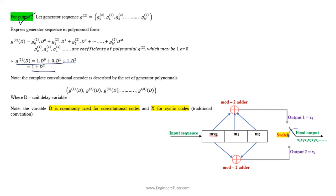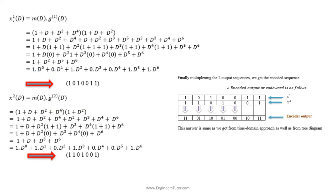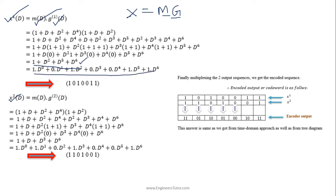Note that d is normally used for convolutional codes and x for cyclic codes — this is the traditional convention. We represent the first and second outputs in terms of polynomial representation. From block codes we know x = m·g, where m is the message signal and g is the generator matrix. Similarly we multiply the message polynomial with the generator polynomial, and for the first output we get 1 + d² + d⁵ + d⁶.